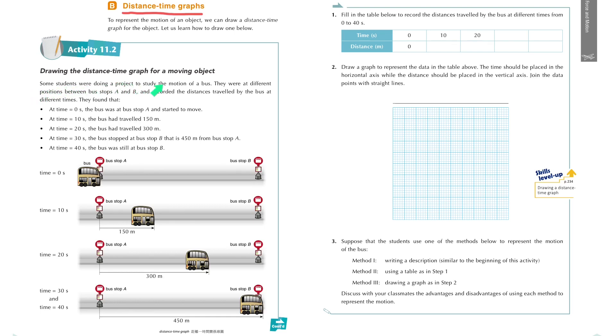Here is an example. Suppose a student wants to study the motion of a bus, and so he tried to record different positions between the two bus stops at different moments. At time zero, which is the starting moment, the bus is stopped at point A and starts to move.